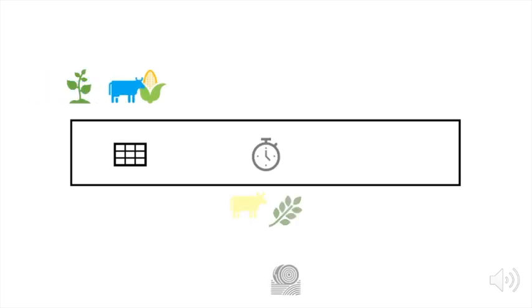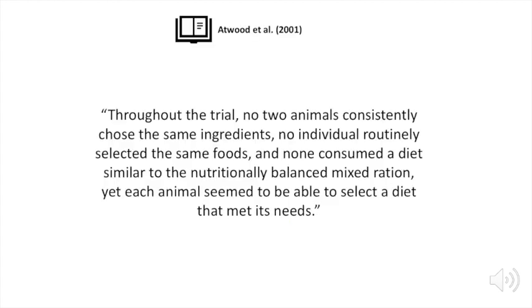What is interesting is that individual calves seem to have different preferences depending on the day, time of day, and over the course of several weeks. Atwood et al. 2001 write: throughout the trial no two animals consistently chose the same ingredients, no individual routinely selected the same foods, and none consumed a diet similar to the nutritionally balanced mixed ration, yet each animal seemed to be able to select a diet that met its needs.